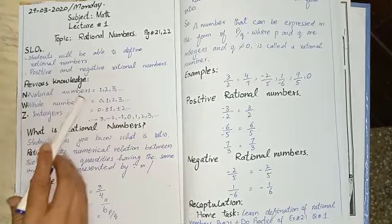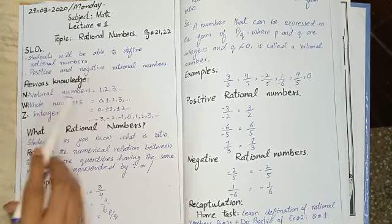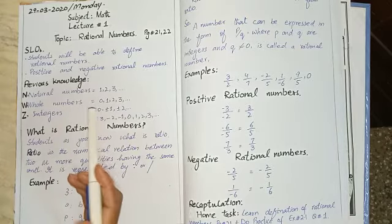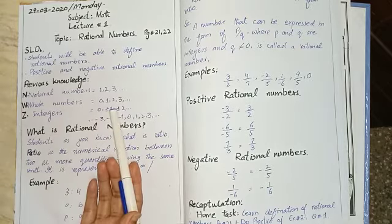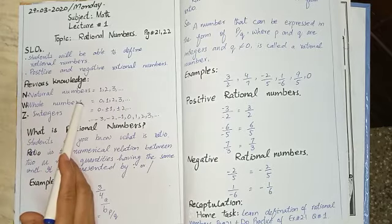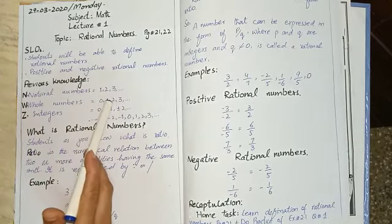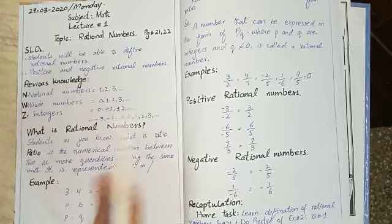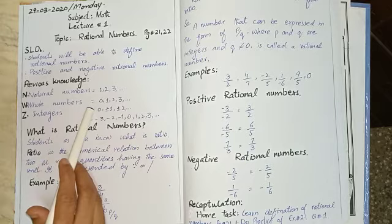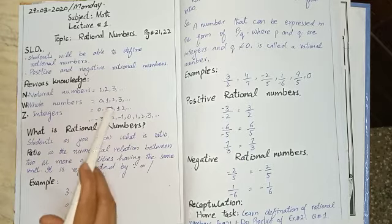Now we will discuss previous knowledge. N: natural numbers = 1, 2, 3, and so on. W shows whole numbers = 0, 1, 2, 3, and so on.